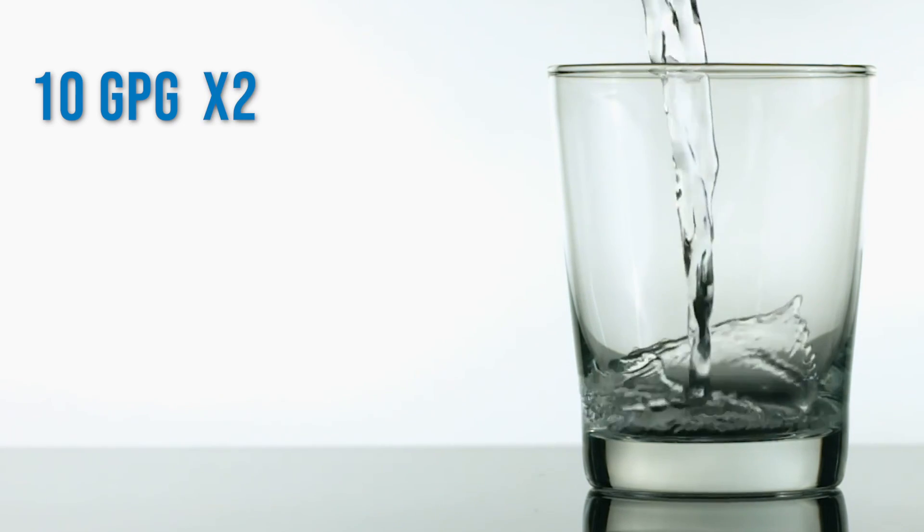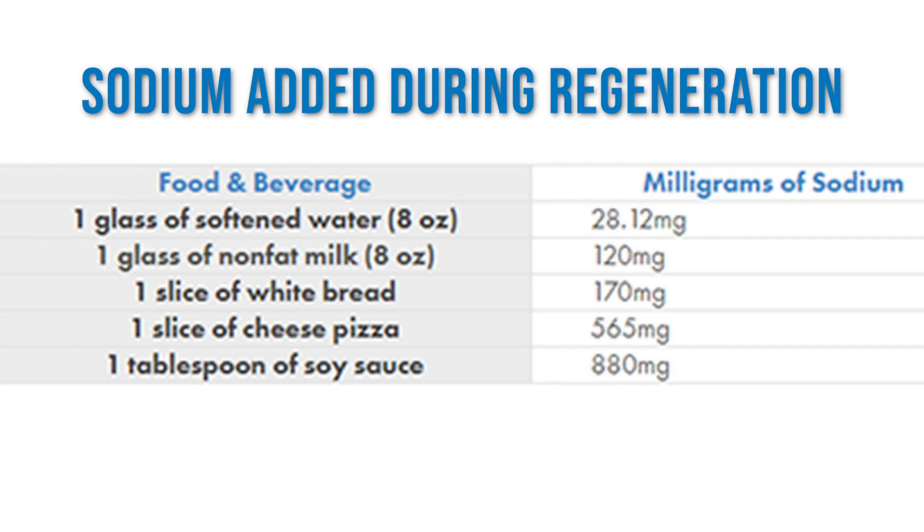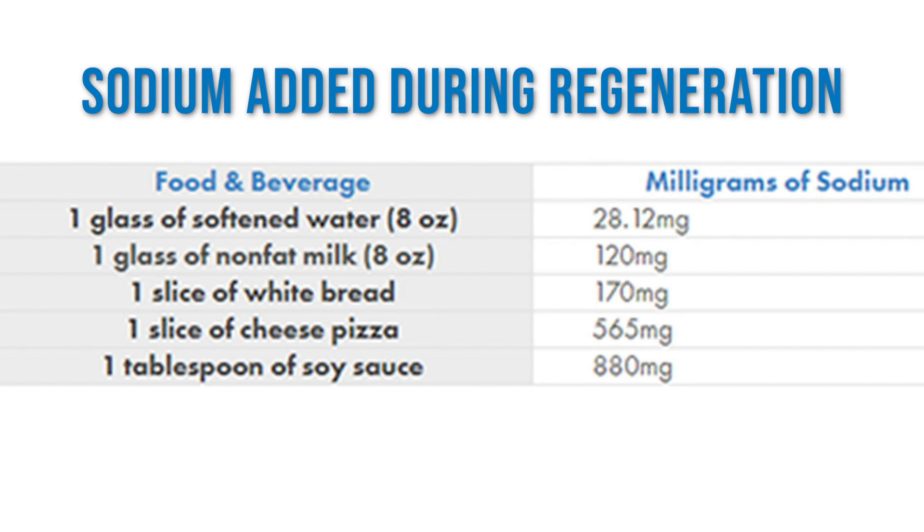If you want to know specifically how much sodium is added by a water softener, the equation is simple. If you have 10 grains of hardness in your water supply, multiply that by two and that's roughly how many milligrams of sodium you'll get in an 8-ounce glass of water. So 10 grains of hardness times 2 equals 20 milligrams in an 8-ounce glass. The maximum daily allowance of sodium is between 1,500 and 2,000 milligrams, so 20 milligrams is not large in the grand scheme. If sodium is a concern, a reverse osmosis system under your sink will eliminate not only the sodium added by the water softener, but also naturally occurring sodium in your water supply.